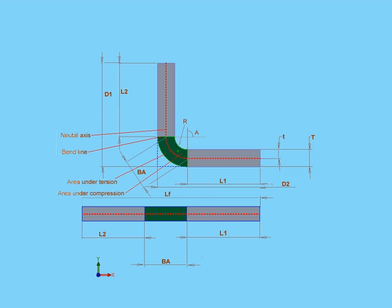Let's get back to SOLIDWORKS. How exactly does SOLIDWORKS calculate bend allowance? SOLIDWORKS actually uses two methods: bend allowance and bend deduction. I'm going to explain what these methods are and show you how they're used in SOLIDWORKS.